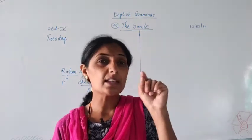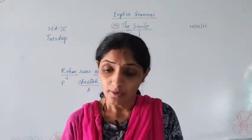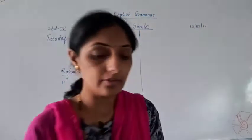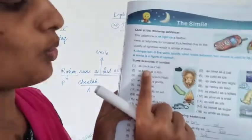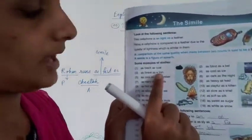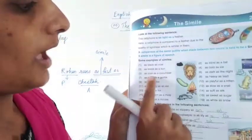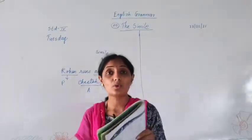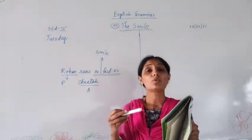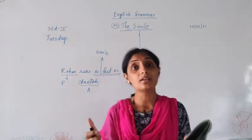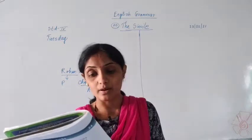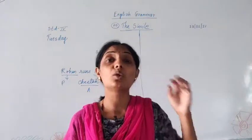For example: the stream was as black as coal. So many examples are given of comparison. As black as coal. As cool as cucumber — cucumber is very cool. In Marathi we call it kakadi. So: as cool as cucumber. As hairy as a gorilla.